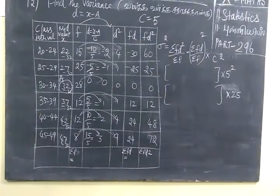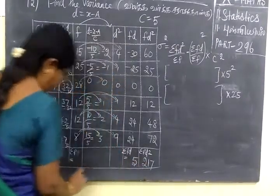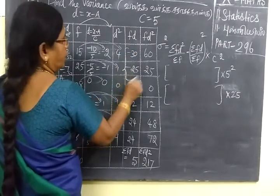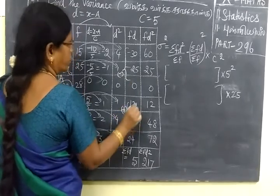So if you add you are getting 72, then 2, 1, 7, then 5, 2, 1, 7. This is 5, this is 100. Then you add and put minus sign. Here also add and put plus sign.